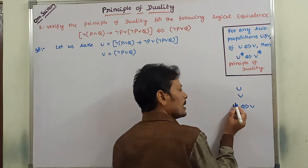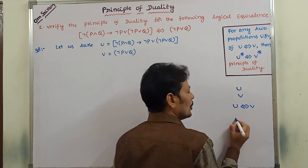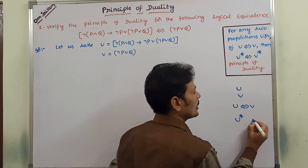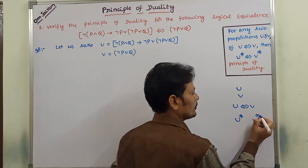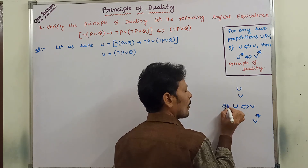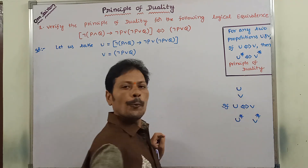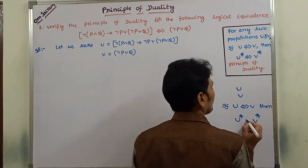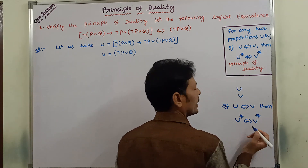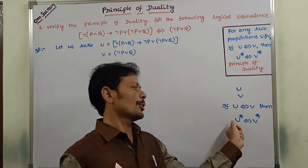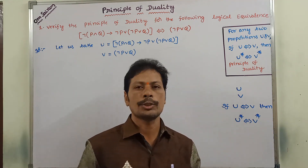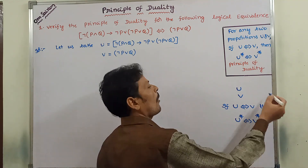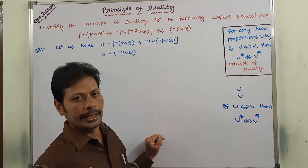Then, what is the dual of U? That is U star. What is the dual of V? That is V star. If U is logically equivalent to V, then their duals are also logically equivalent — that means U star is logically equivalent to V star. This principle can be called the principle of duality.